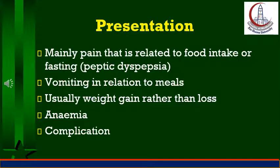Occult blood in stools, melena, and hematemesis can also occur. It may be due to gastrinoma, also called Zollinger-Ellison syndrome.